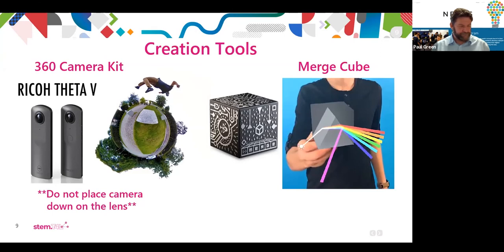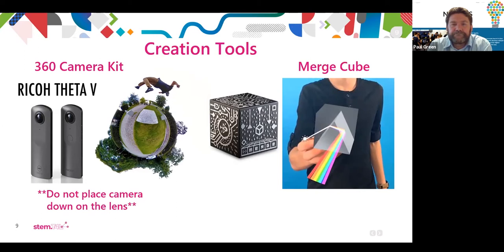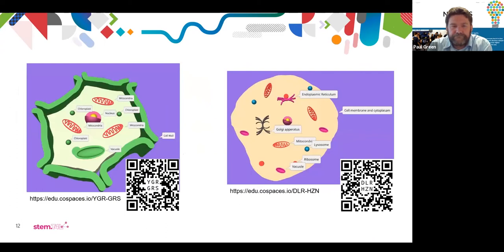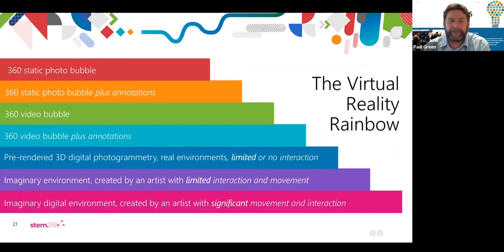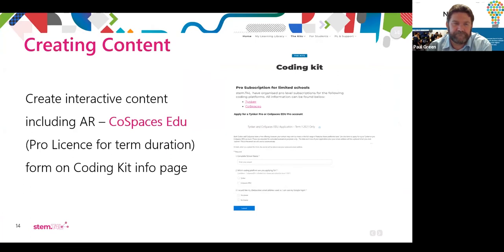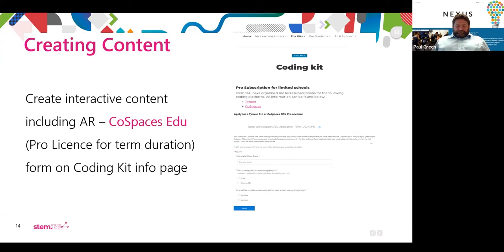These are the QR codes — I'll share this on social media as a PDF under the live recording. Looking at the virtual reality rainbow, you can see there are different levels of creating virtual environments. When using CoSpaces, we're creating interactive content. Most importantly, to access a license: if you use CoSpaces right now it won't be the pro version. But through STEM.t4L you can get your license by going to the learning library — that's in My Learning Tools on the staff portal.